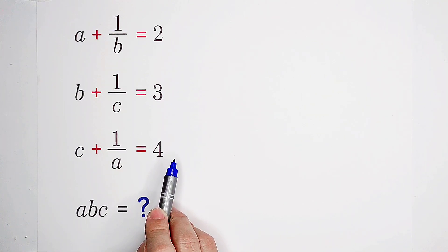So now what shall we do? Maybe we're gonna say we can solve for the values of a, b, and c, then multiply them times each other.